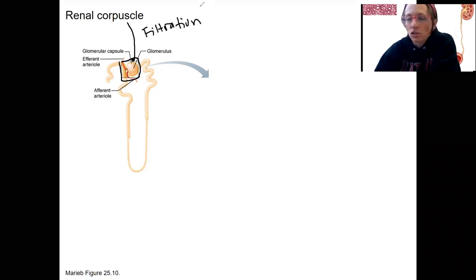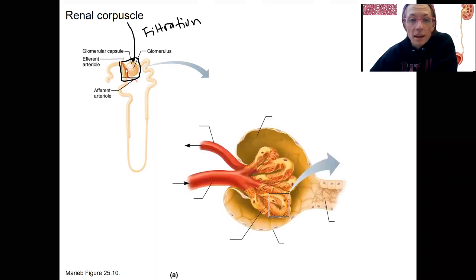Let's zoom in to that structure. The renal corpuscle is made up of the glomerular capsule and inside that, the glomerulus, just like shown up there.